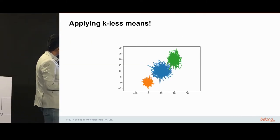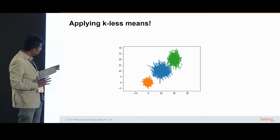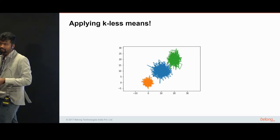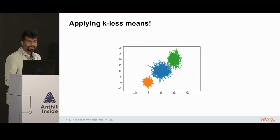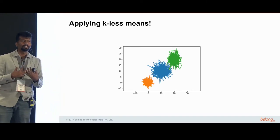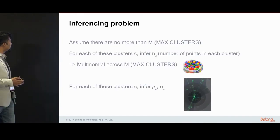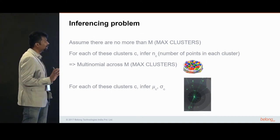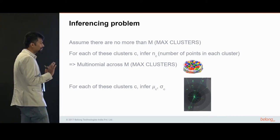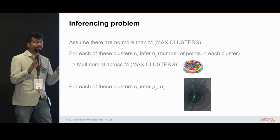As a data scientist, you are given only these points and have to infer what went into generating that data. Assume there were three clusters — the orange one with a smaller variance, the blue one with a bigger variance, and the green one with a skewed covariance. The next step is the inferencing step: we know this data was generated in this fashion, and now we have to compute the parameters with which it was generated. Assume there are no more than M max clusters. M could be as many as the number of points, but usually you have some hunch — which is better than guessing the exact value of K.